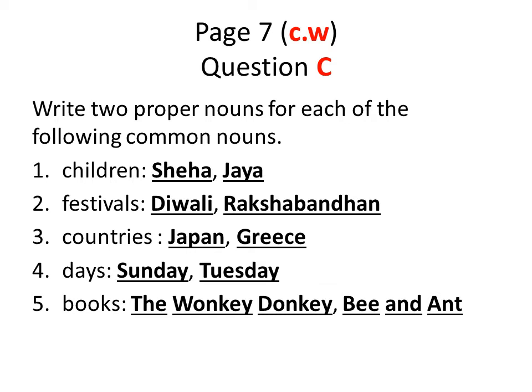For festivals, you can write any festival name — I wrote Diwali and Raksha Bandhan. Whatever you wish, you can write, but remember the starting letter should be capital. For countries, I wrote Japan and Greece — you can write your own. For days: Sunday, Tuesday, or any other day. For books, I wrote The Wonky Donkey and Be an Ant. Always remember the first letter of the proper noun will be capital, and you can write your own answers.